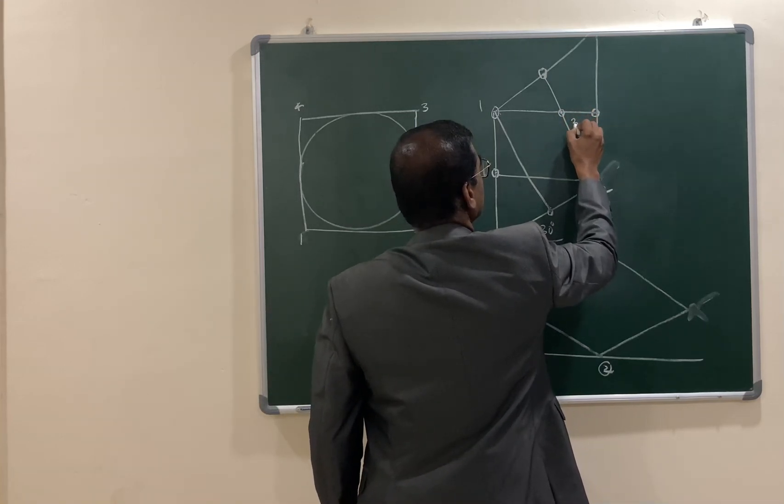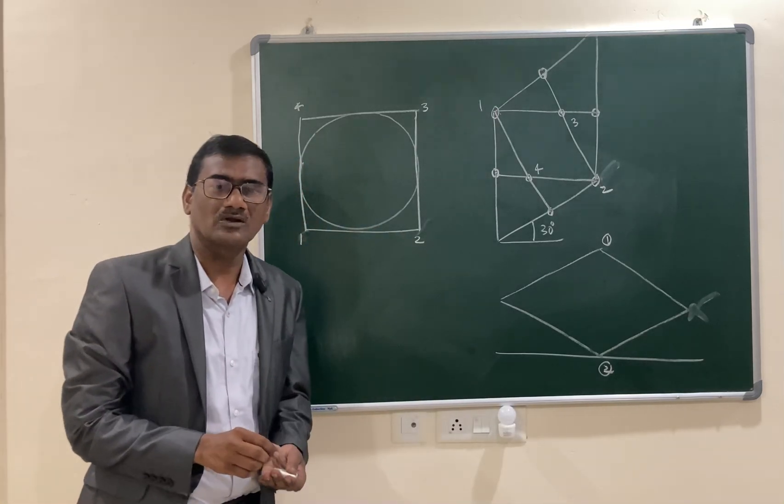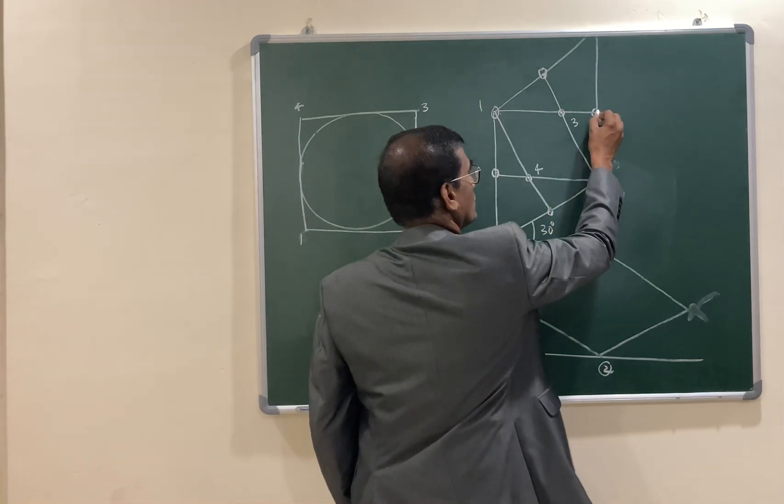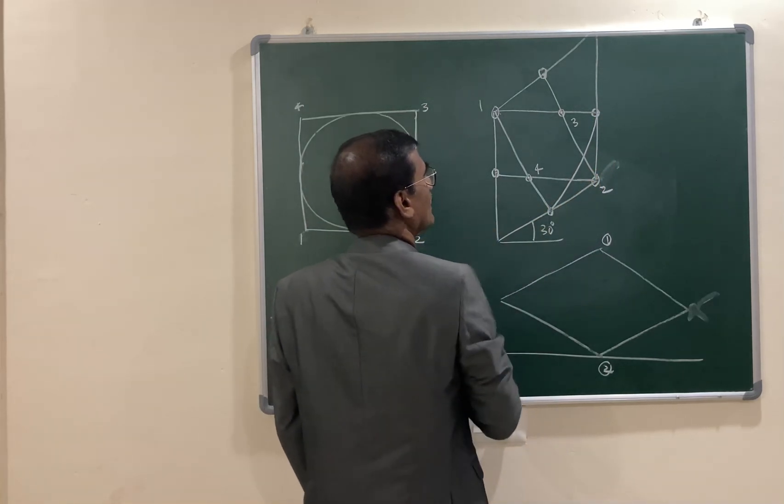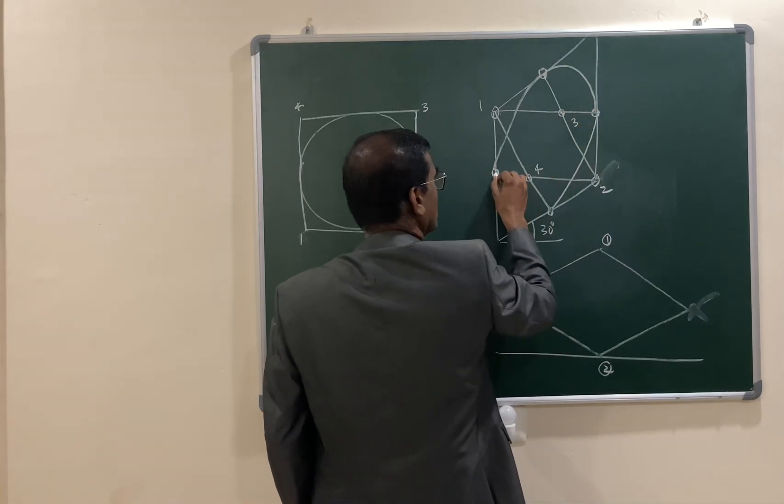This is three and this is four. Let us draw a circular arc with one as center joining these two points, and two as center joining these two points, and three as center joining these two points, and four as center joining these two points.